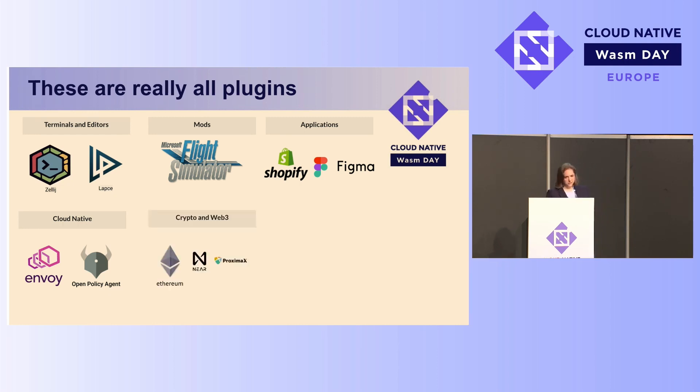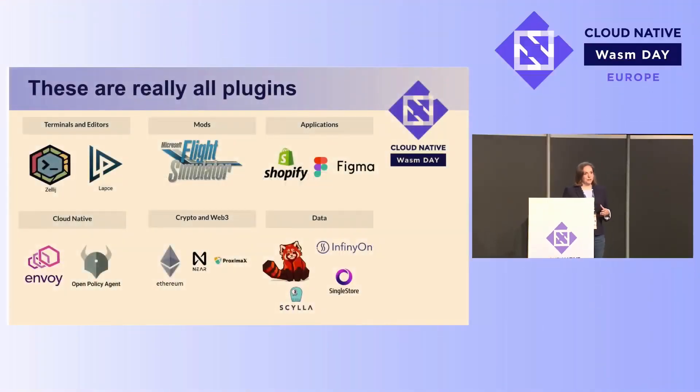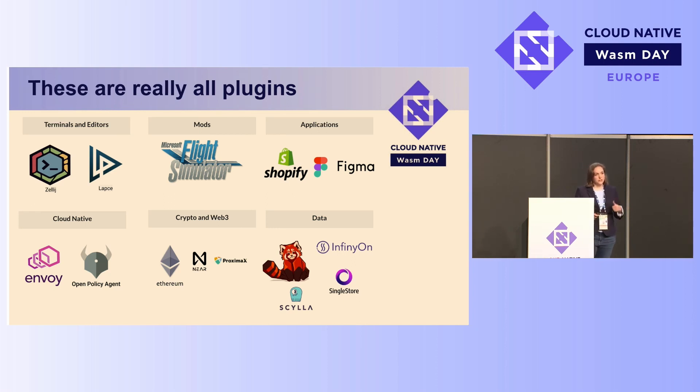Smart contracts run on the blockchain, and once some set of conditions has been met, the smart contract executes on any computer participating on the blockchain — that could even be your own desktop. That's got to be safe, secure, and sandboxed. To me, that's a plugin. Red Panda and Infineon are both data streaming engines that allow users to pass in their own transformations and basically bring arbitrary code to run in those systems. The database I work on is SingleStore, but there are many others finding ways to add user-defined functions using WebAssembly — SillaDB, TIDB, and many others — pushing compute down to the data.